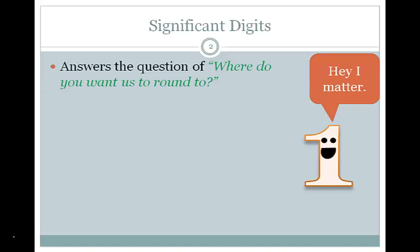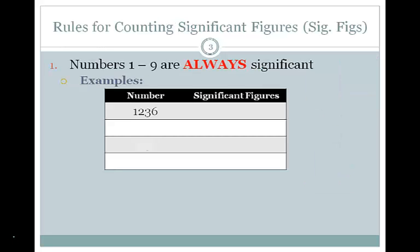Significant figures is going to answer the question: where do we round? To figure out if a number is significant, we're going to use a couple of rules. The first one is that the numbers 1 through 9 — the real numbers — are always significant. Here we have four numbers, none of them are zeros, so four significant figures.